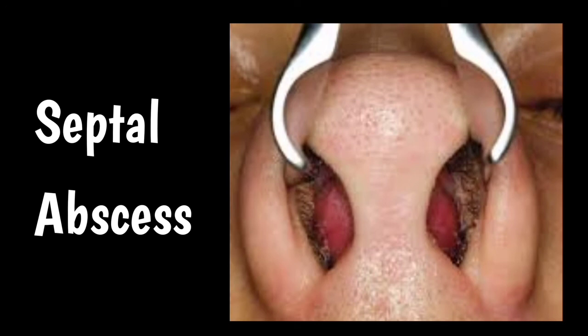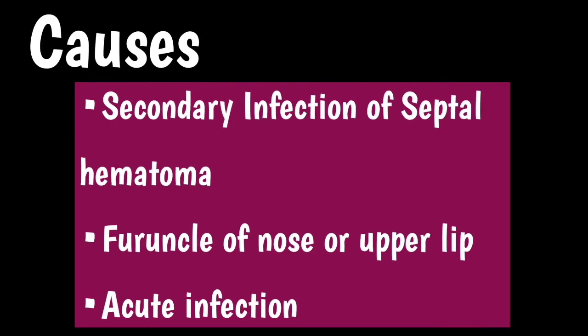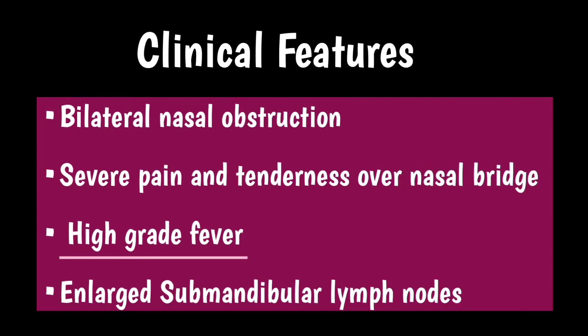Septal abscess is a collection of purulent material between the cartilaginous or bony septum and the mucoperichondrium or mucoperiosteum. The main causes include secondary infection of septal hematoma, furuncle of the nose or upper lip, and acute infections such as typhoid or measles.